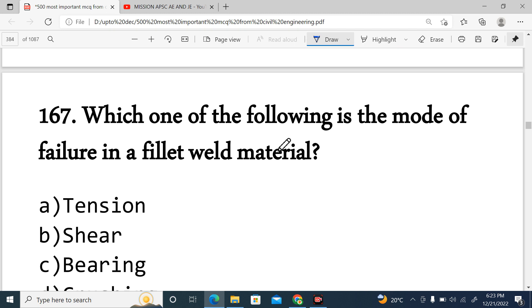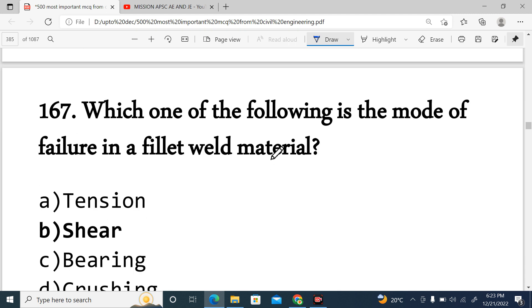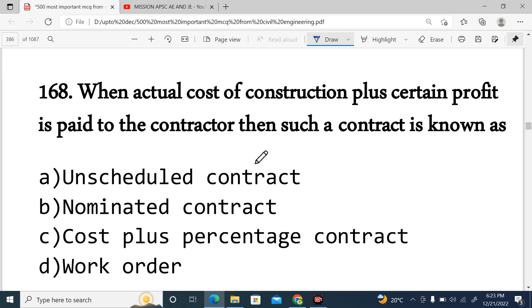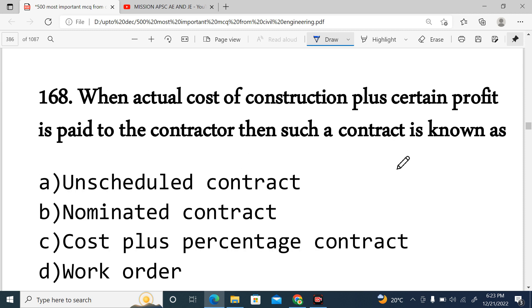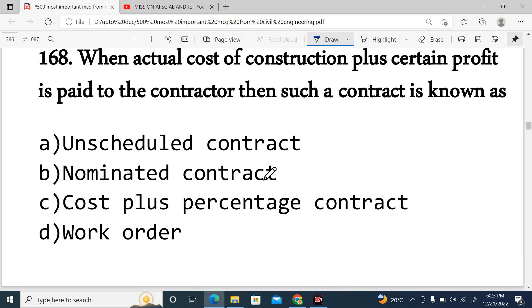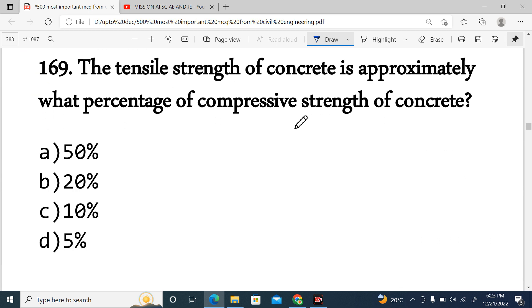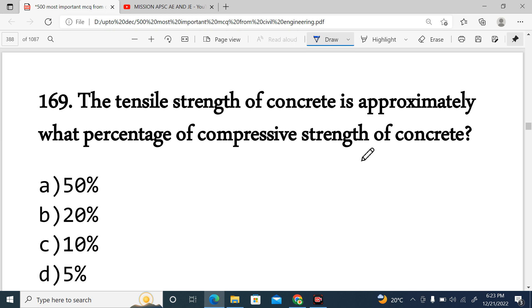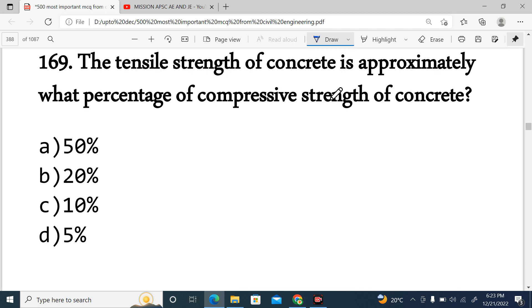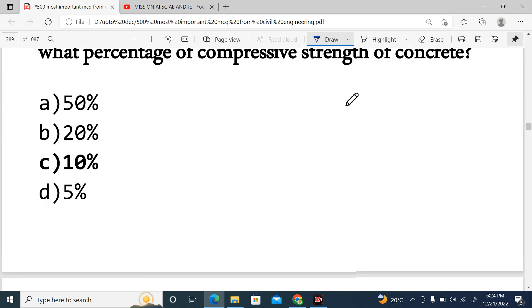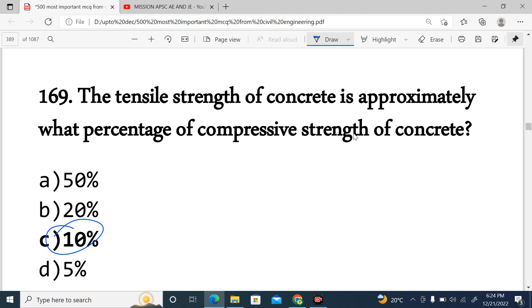Question 167: Which of the following is the mode of failure in a filled well? Generally, shear failure is occurring in filled wells. Option B. Next, Question 168: When actual cost of construction plus certain profit is paid to the contractor, then such contract is known as cost plus percentage contract. Next, Question 169: The tensile strength of the concrete is approximately what percentage of the compressive strength? Concrete is weak in tension, so obviously it will be less than compressive. The answer is around 10 percent. If compressive strength is 100 MPa, tensile strength will be around 10 MPa. Option C is correct.